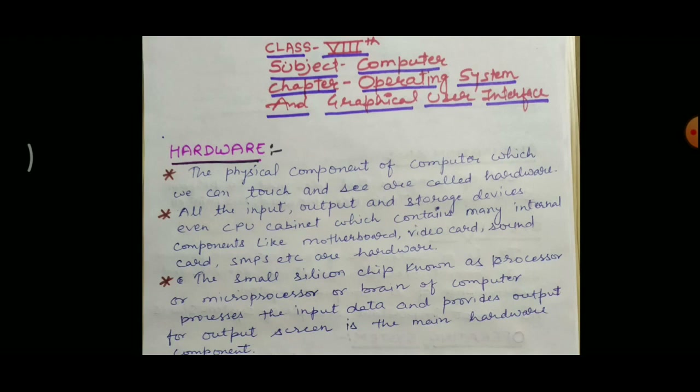We all know that computer is a combination of hardware and software, and both hardware and software are interdependent on each other. If one part is missing, then we cannot do any work in the computer, and the computer acts as an empty box. So both hardware and software are important for working in a computer.